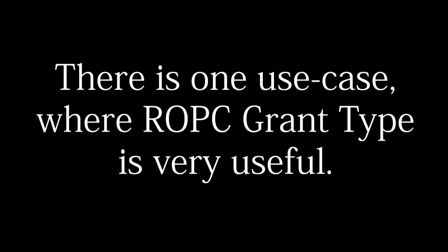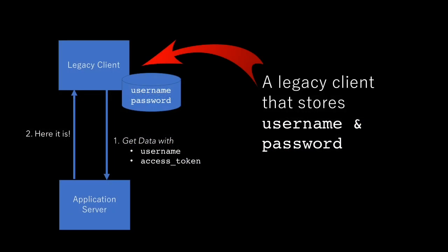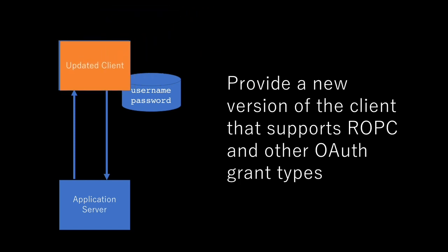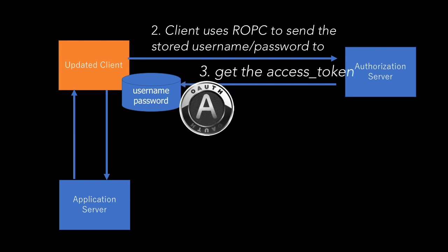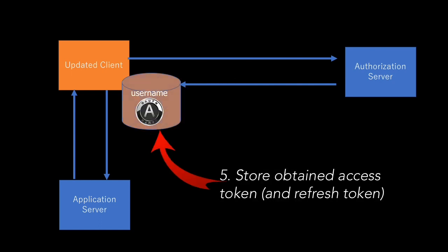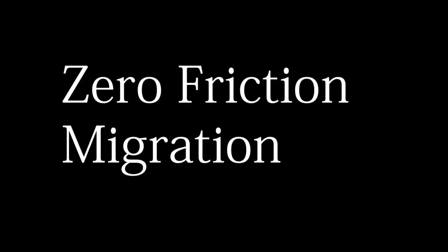But why is it written there? Well, it's because there's one use case where it is very useful — that's when you want to migrate your legacy client that stores passwords to OAuth. Such legacy clients indeed store the password. When you provide a new version of the client that supports OAuth, what you can do is use the resource owner password credential grant to take the stored password, send it, and convert it to OAuth tokens. That way, the user is migrated from the password-storing legacy client to a modern OAuth client. It's a zero friction migration.